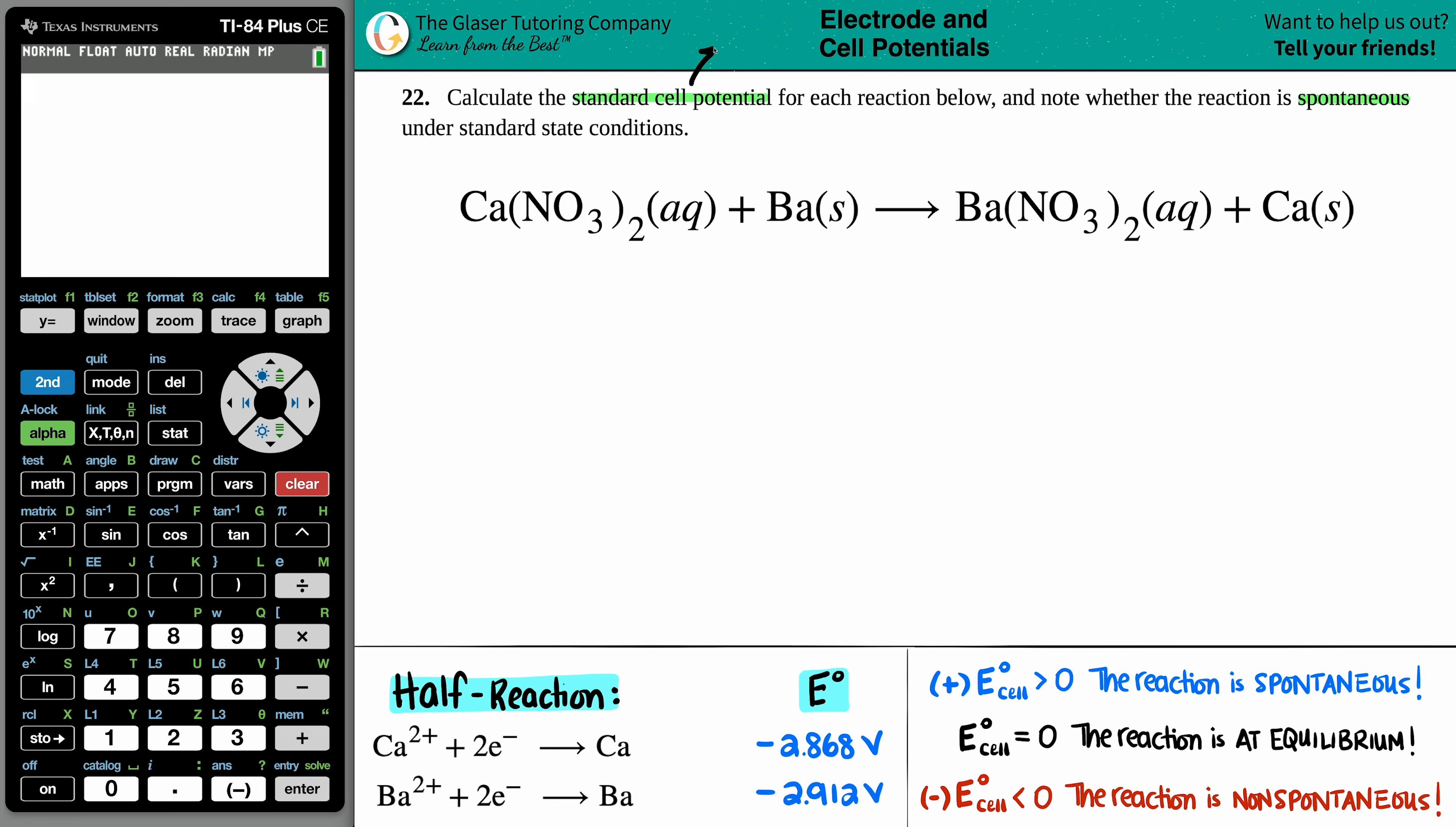Now just know that for cell potentials, we're looking for E cell, E° cell, that little ° up there. That's a degree sign. That just means that we're under standard conditions. And since they told us that we're dealing with standard cell potential, we got to have that ° in there.